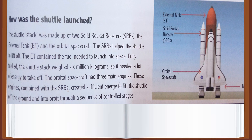Look at this picture — we have the two solid rocket boosters, which in Arabic means 'boosters' (معززات). How many solid rocket boosters do we have? We have two. The abbreviation is SRBs. The external tank is abbreviated ET. The orbital spacecraft is the third part. So the three parts of the shuttle stack are: the SRBs (boosters), the external tank which contains the fuel, and the orbital spacecraft.